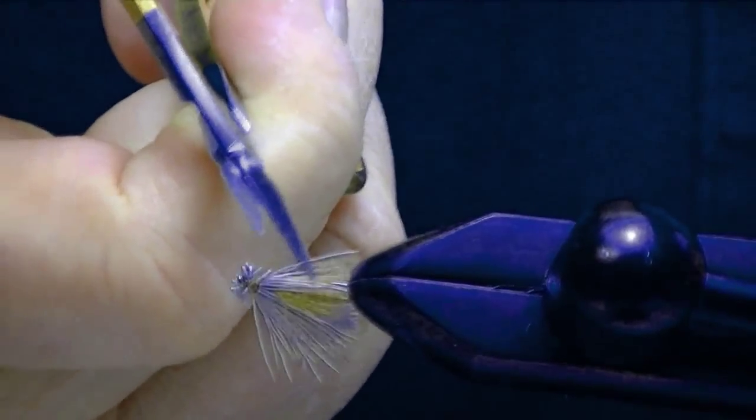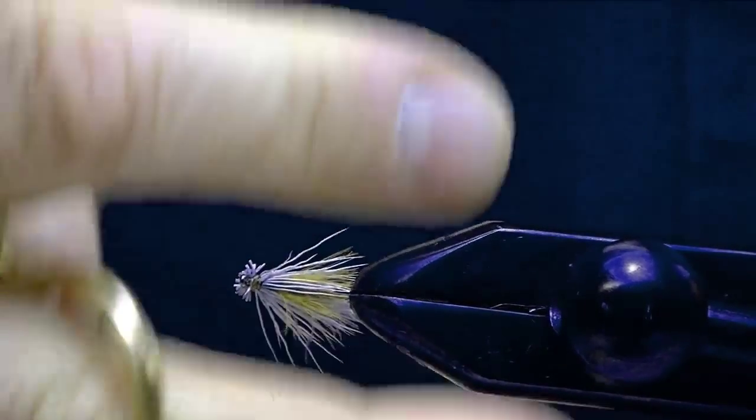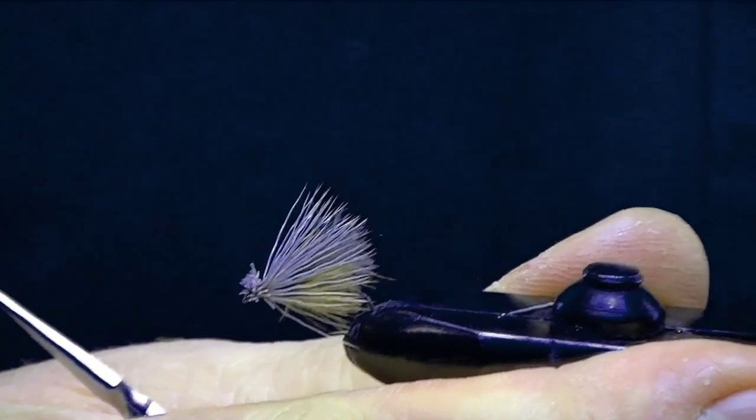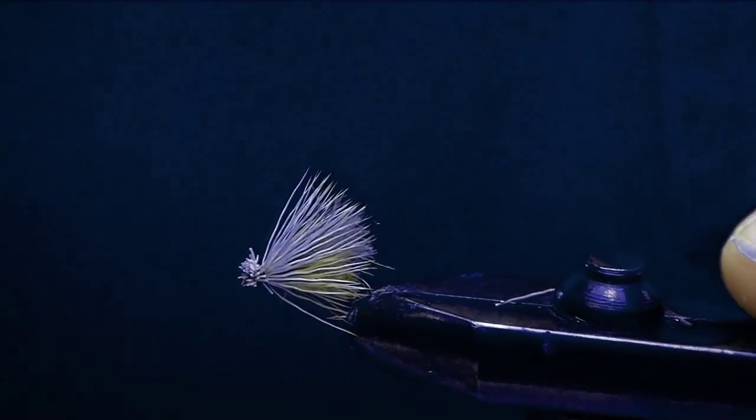Underneath it's got a little fine and dry body. It's got your heavy duty V wing CDC. It's got an under wing of gray CDC underneath the elk wing. And I think that's about it.